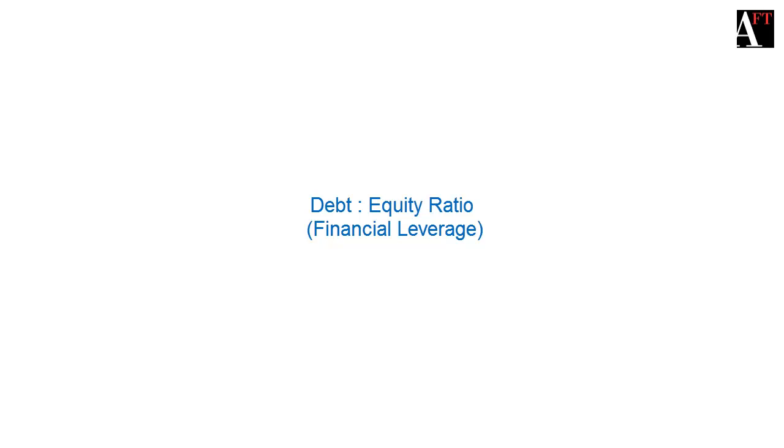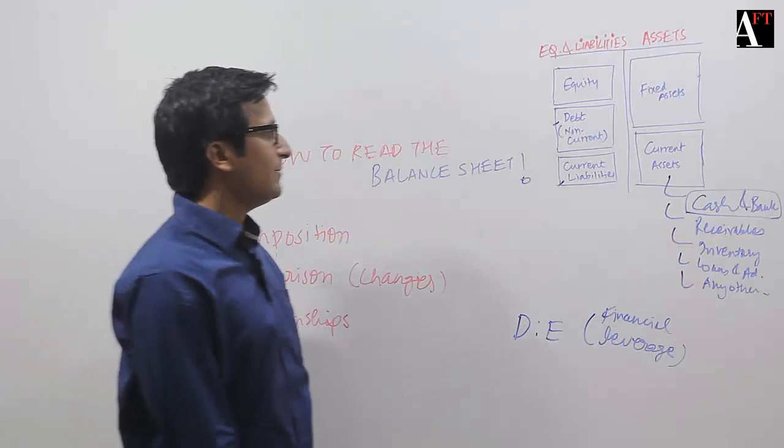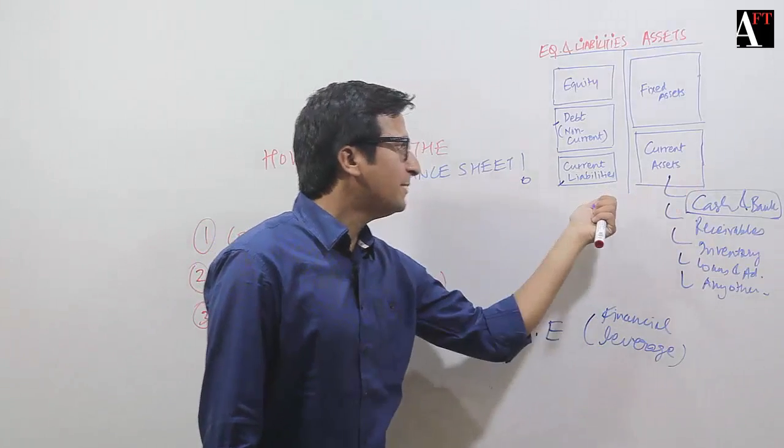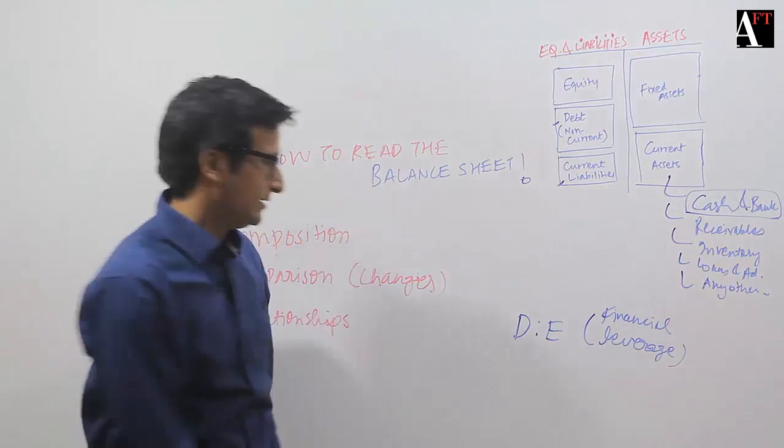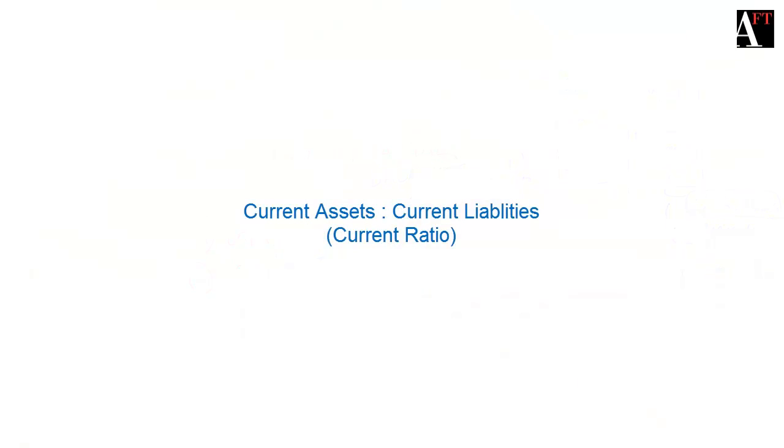This is popularly known as the debt to equity ratio, or the financial leverage. Sometimes I'm trying to find out the relationship between current assets and current liabilities. This ratio is popularly known as the current ratio.